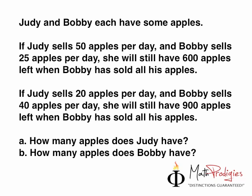The answer is, for part A, 1000 apples. And for Bobby, it's 200 apples. So for part A the answer is 1000 apples, and for part B the answer is 200 apples.